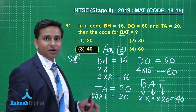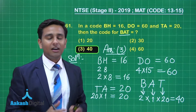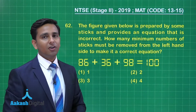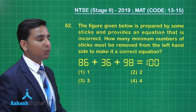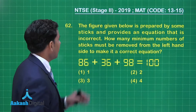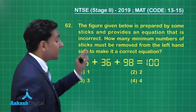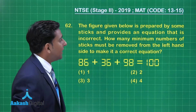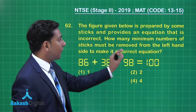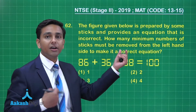Option number 3 is the correct answer for this question. I hope you understood this question based on the concept of coding and decoding. Now let's solve question number 62. This question states: the figure given below is prepared by some sticks and provides an equation that is incorrect. How many minimum numbers of sticks must be removed from the left-hand side to make it a correct equation?